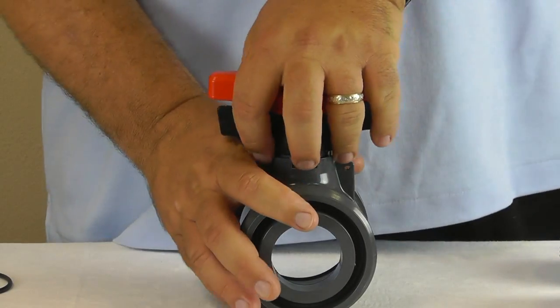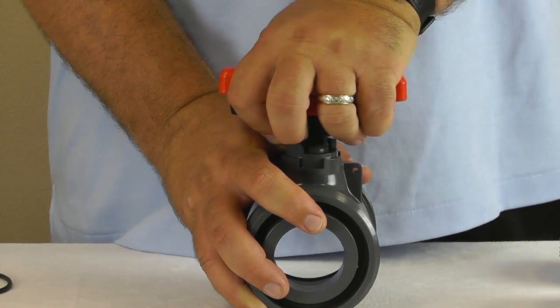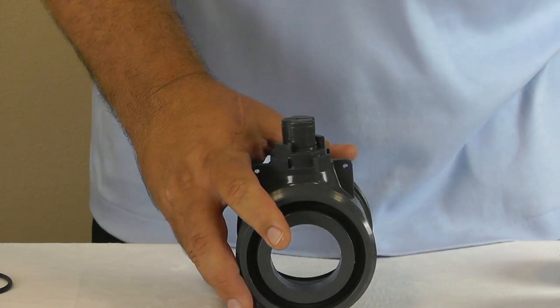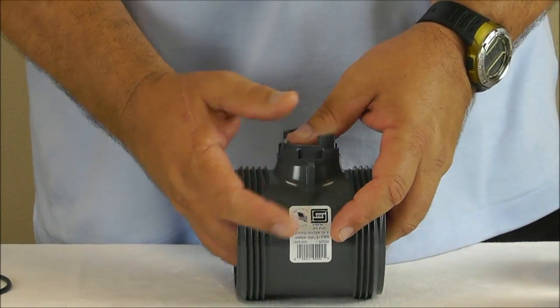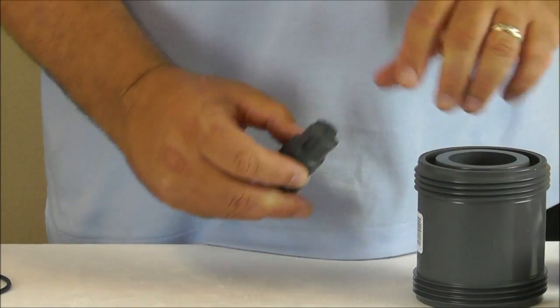Pull the handle and handle lock off the stem using a side to side rocking motion. Now press the stem down in the valve body and remove the stem.